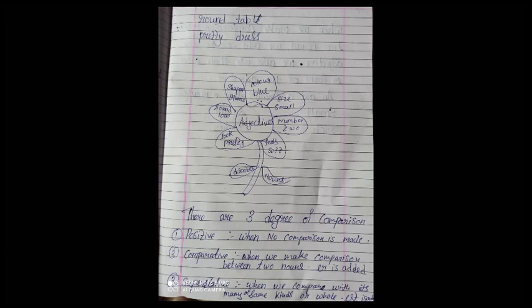There are three degree of comparison. Comparison means adjectives can be compared in three ways. The three ways of comparison are positive, comparative and superlative. But here we are going to do comparative degree.